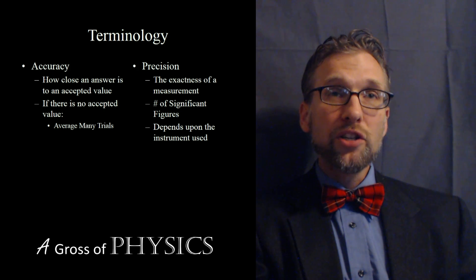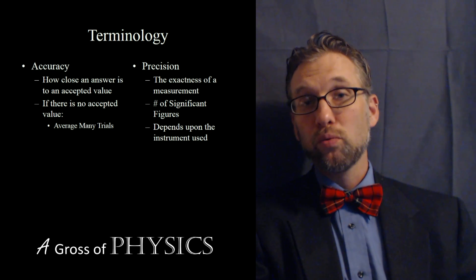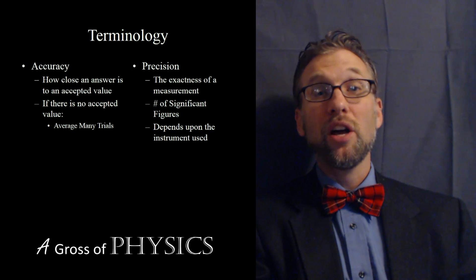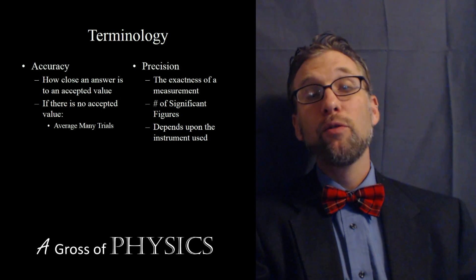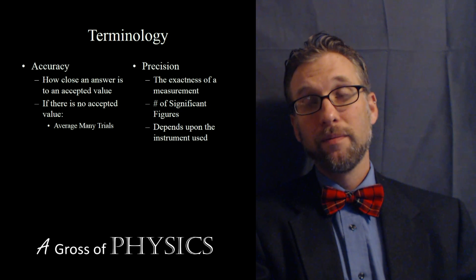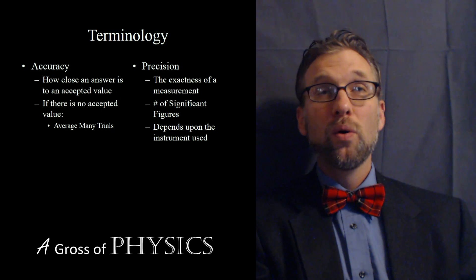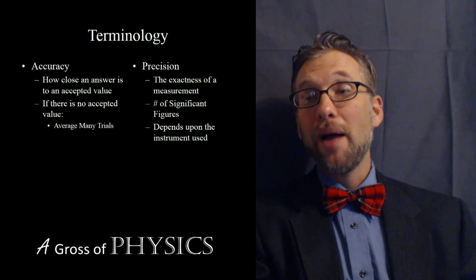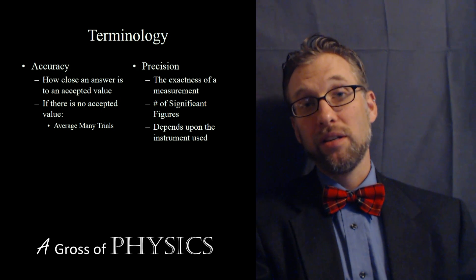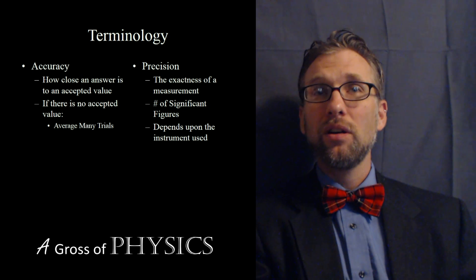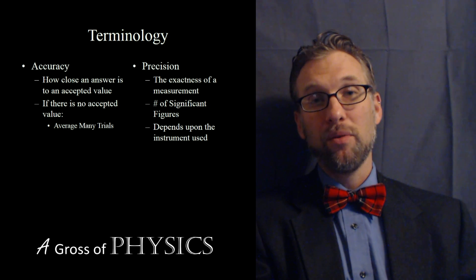The precision is based on the tool that's used to make the measurement. For example, a centimeter ruler would give you precision to the hundredths place. On the other hand, a vernier caliper would give you precision to the thousandths place. Many of you coming from chemistry probably used a triple beam balance or a quantitative balance. And the balances that are more exact would have more decimal places that you're certain of.